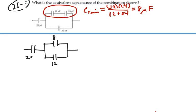Alright, so now we have a parallel combination here. We can add those two together. So we have 8 plus 12, 20 microfarads.